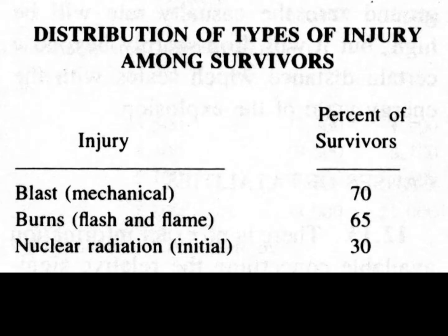The distribution of types of injury among survivors from Hiroshima and Nagasaki — these are survivors. 70% suffered blast or mechanical effects: they were thrown or hit with an object. 65% suffered burns, including flash and flame — flame being objects lit on fire after the thermal flash, and flash being the thermal radiation directly impacting the individual. 30% were affected by the initial nuclear radiation. The amount of people affected by nuclear radiation generally shows that it's not the main killer. Here, it's blast.